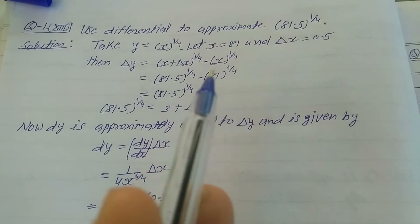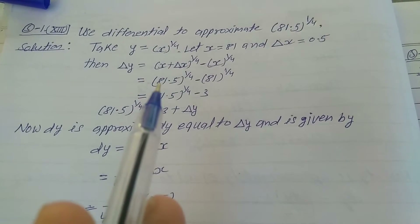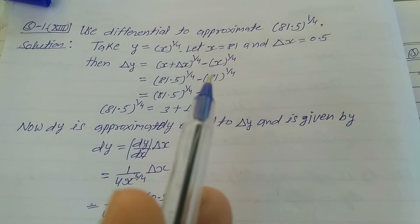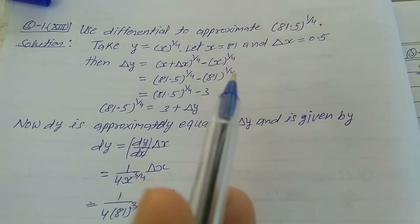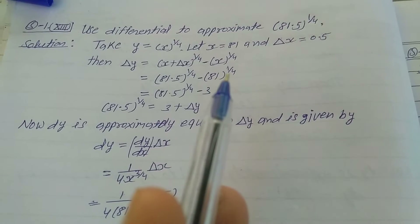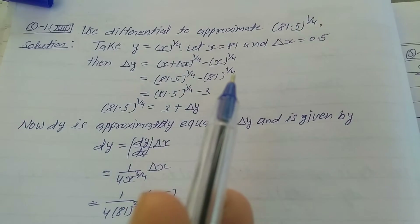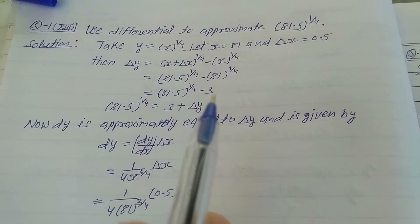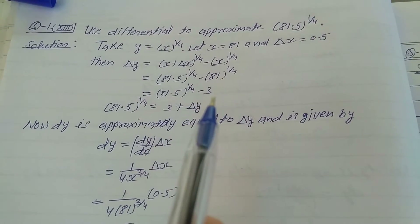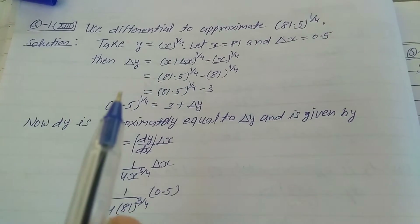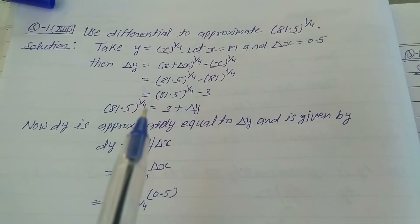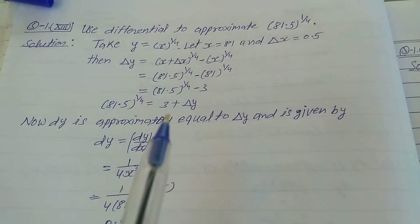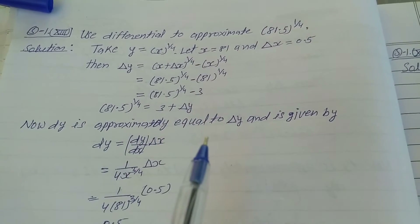Substituting x + delta x = 81.5 and x = 81: delta y = (81.5)^(1/4) minus (81)^(1/4). Since 81^(1/4) = 3, we get delta y = (81.5)^(1/4) minus 3. Rearranging, (81.5)^(1/4) = 3 + delta y.